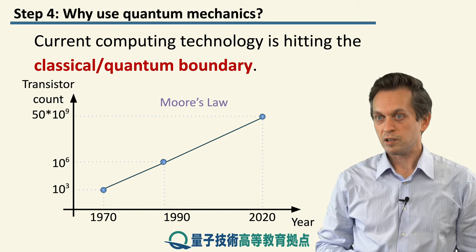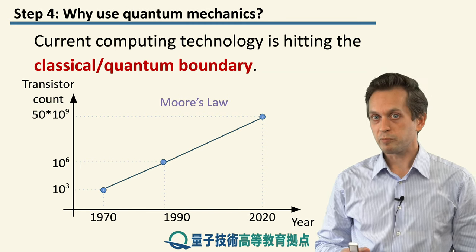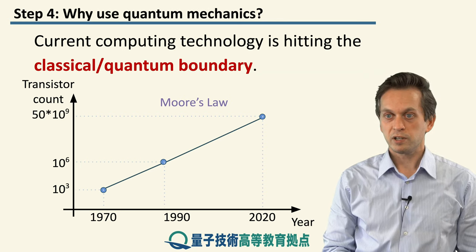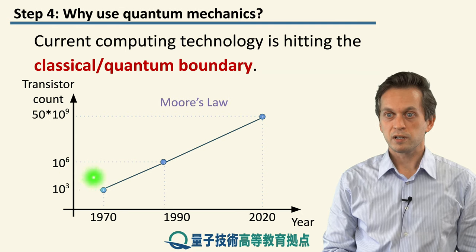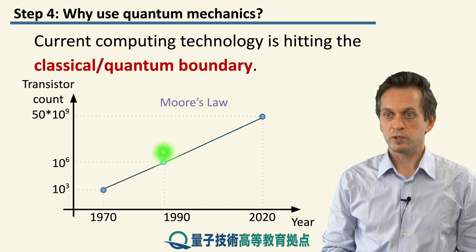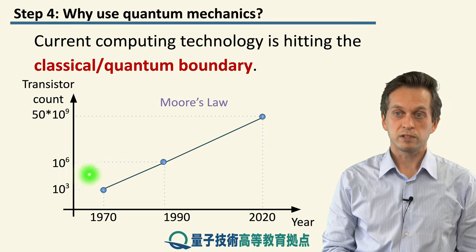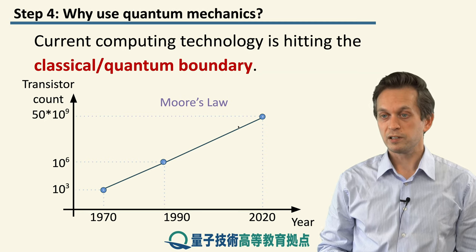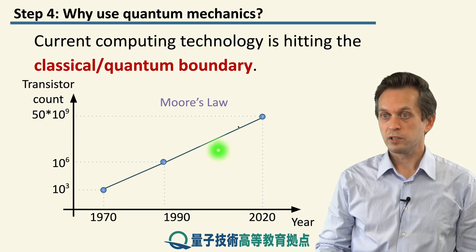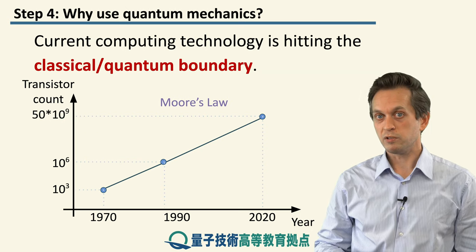It's a prediction made by Moore that the number of transistors on a chip doubles approximately every two years. For example, in the 1970s, we were down here in terms of the number of transistors per chip, and it was in the thousands. Then, 20 years later, with the introduction of Intel Pentiums and similar processors, the number of transistors had risen to approximately a million. And around now we are all the way up to 50 billion, with the new Intel chips and the new AMD chips.